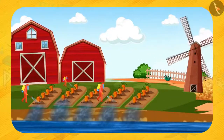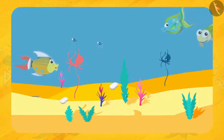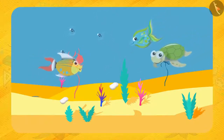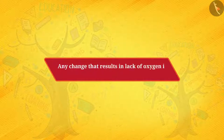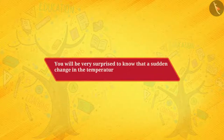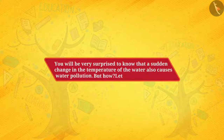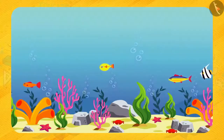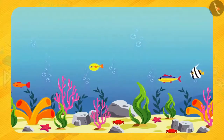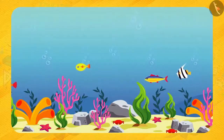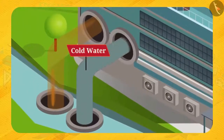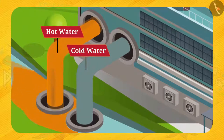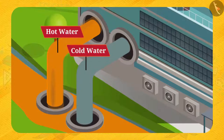Friends, what if useful substances like oxygen are removed from water? Aquatic plants and animals will not get oxygen and they will die. So any change that results in lack of oxygen in the water is considered water pollution. You will be surprised to know that a sudden change in the temperature of water also causes water pollution. Aquatic animals are used to a certain range of temperature. Factories like thermal power plants take cold water from the reservoir and pour hot water into the same reservoir, which greatly affects the life of aquatic plants and animals.